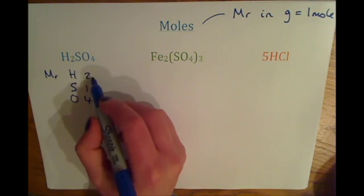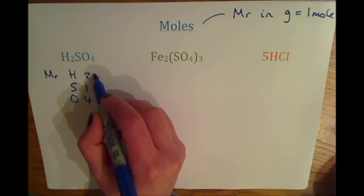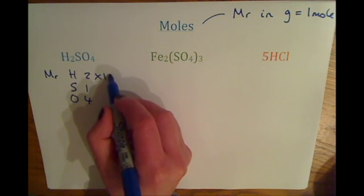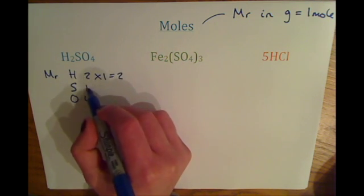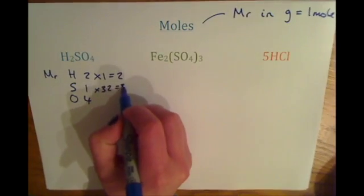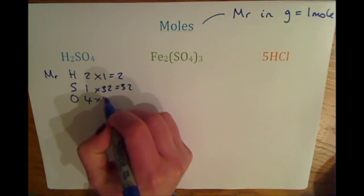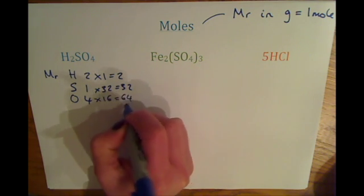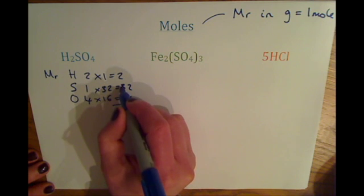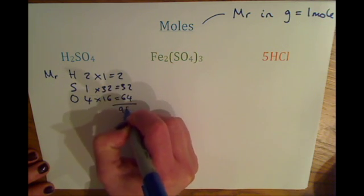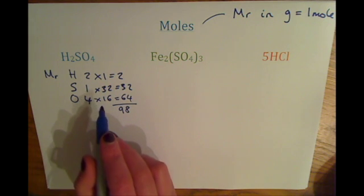Using the masses on the periodic table, we can see that we've got two times one, which is two, one times 32, which is 32, and four times 16, which is 64. Adding those all up, we've got 98. So that's how we calculate the relative formula mass.